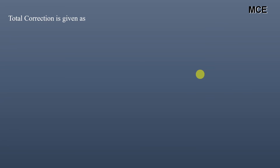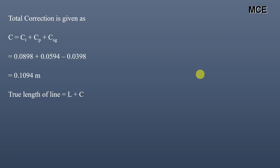The total correction — combining temperature, pull, and sag — is: 0.0898 + 0.0594 − 0.0398 = 0.1094 meters. Since the total correction is positive, the true length equals the measured length plus the correction: 680 + 0.1094 = 680.1094 meters.